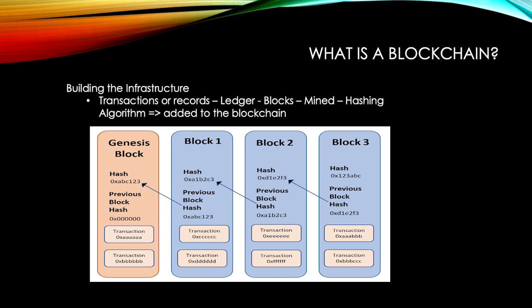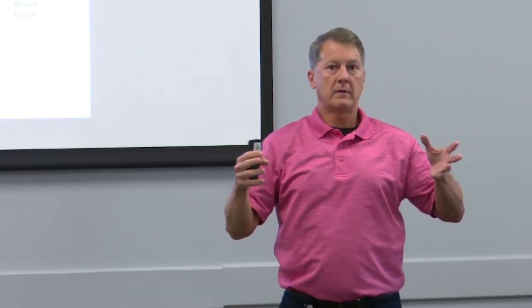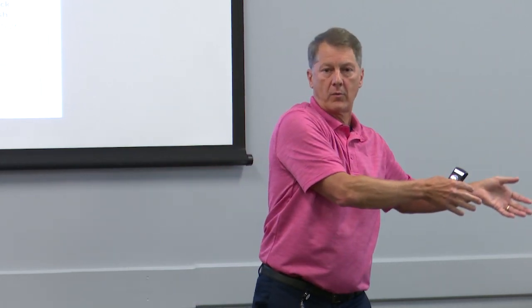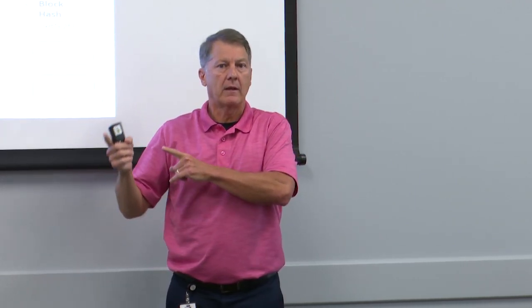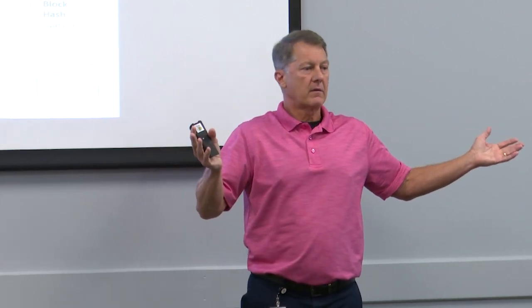That hash is then in the next block, and all the transactions in that block are used to create the next hash — and that process continues on. So if you've ever bought Bitcoin or moved Bitcoin from one wallet to another, those transactions are on the Bitcoin blockchain and they're always going to be there. It's not your name or your address — it's your crypto address, that alphanumeric wallet address. So if you buy currency from one exchange and send it to another, you have an address — a Bitcoin-type address.